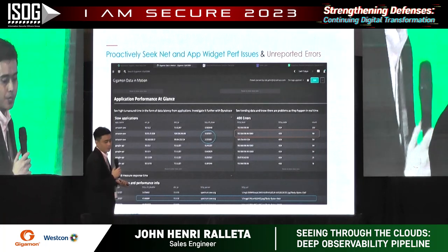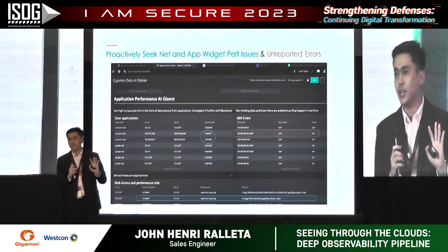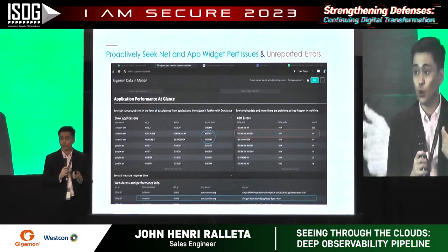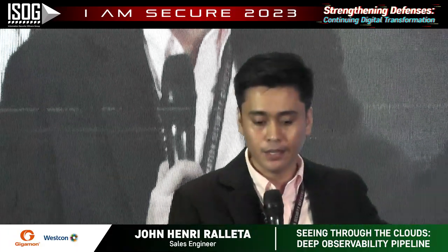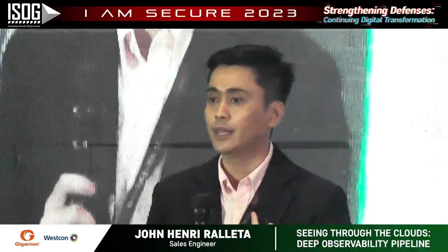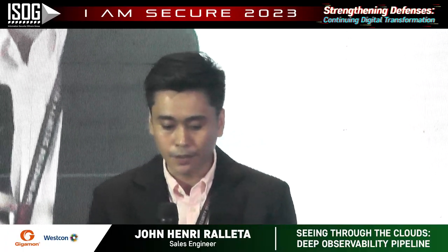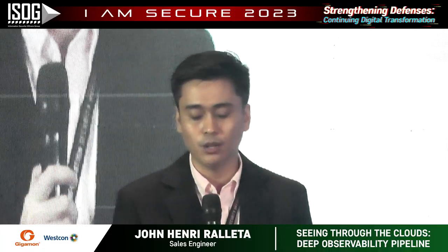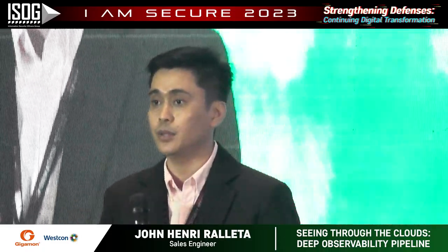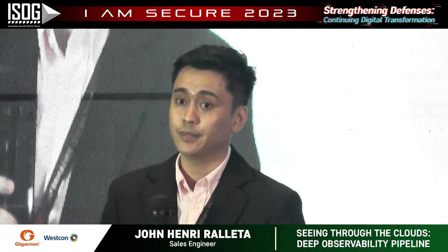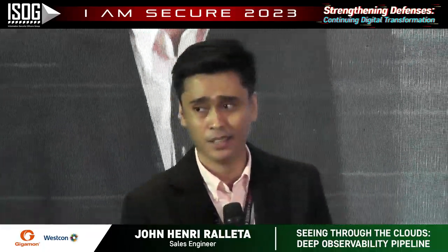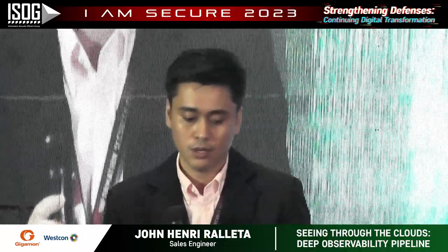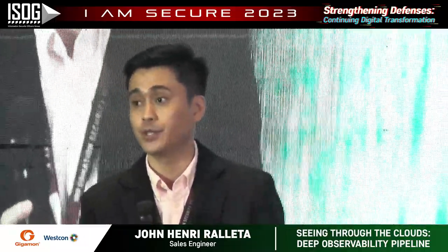For the network use case, from an application and network standpoint, we can identify the slowness of applications and the slowness of the network. From our metadata, we can bring different information pertaining to application errors or application slowness — round-trip time, 400 errors, for example. So we can eliminate those pain points and proactively identify or mitigate what the problem is — whether it's a network issue or an application issue — and determine the right action to improve our application performance and customer experience.